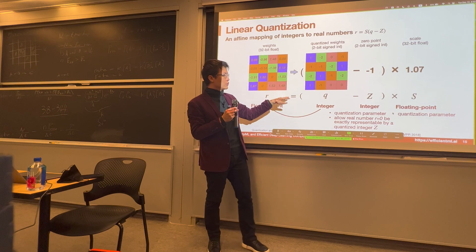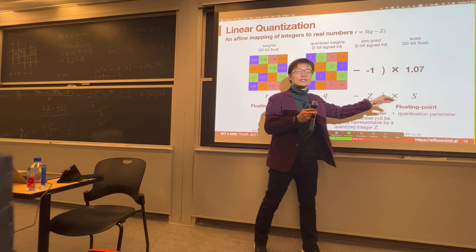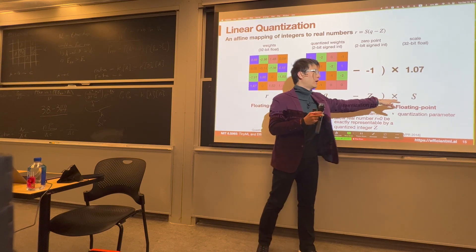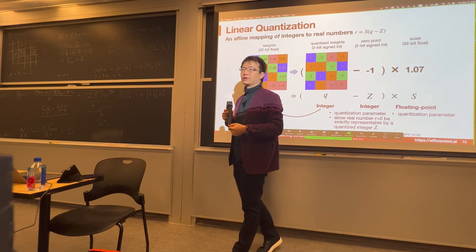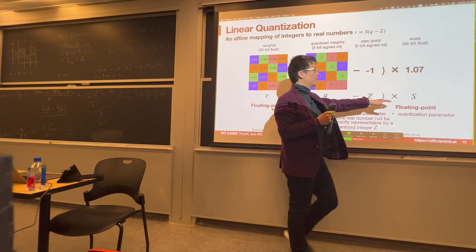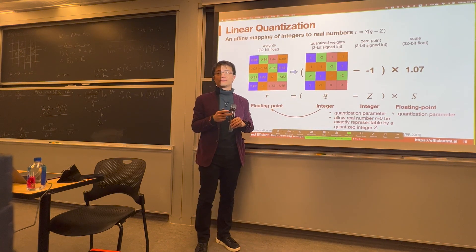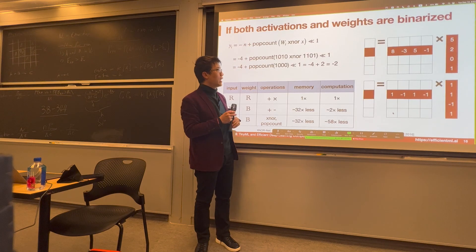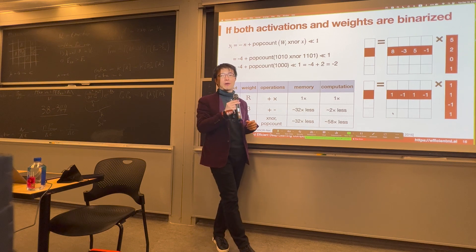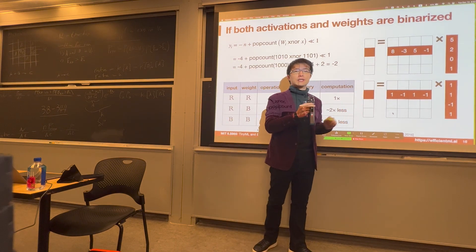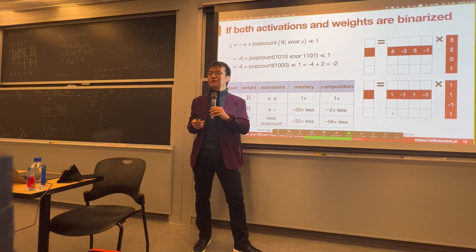For linear quantization, we introduce zero point and scale — the formula being: subtract the zero point, then multiply by the scale. The scale is very important. During on-device training, we use this scale to do quantization and enable training on a real quantized graph. Even more aggressively, we can make both weights and activations binary or ternary, so that multiplication-add operations become a pop count, which is very easy to implement in hardware.